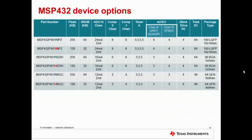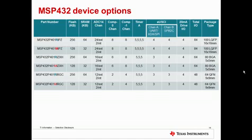MSP432 comes in six different flavors. Devices with an R have 256k of flash and 64k of RAM, while devices with an M have 128k of flash and 32k of RAM. There are three different package options depending on what works best for your application: the smallest being the 5x5 BGA, a 64QFN, and a 100LQFP. This concludes part one of the MSP432 training.